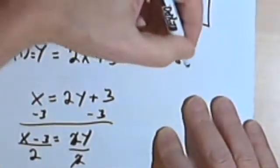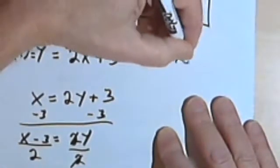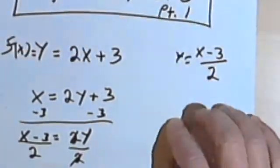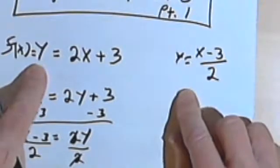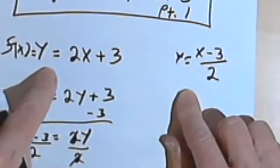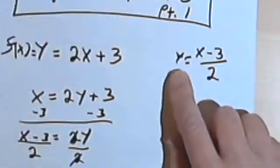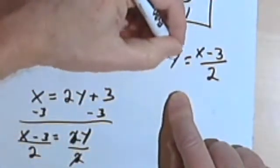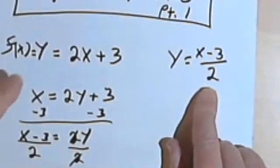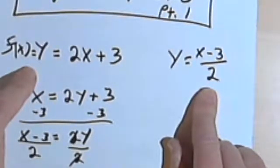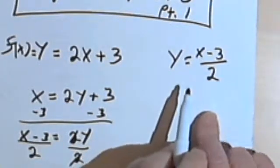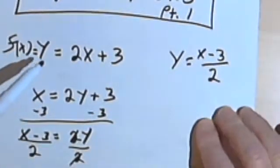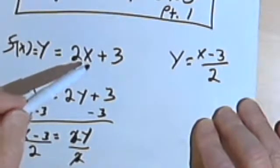Let's rewrite that up here: y equals x minus 3 over 2. Now the original equation, y equals 2x plus 3, and this new one, y equals x minus 3 over 2, are considered inverses of each other. So we can say that y equals x minus 3 over 2 is the inverse of y equals 2x plus 3.